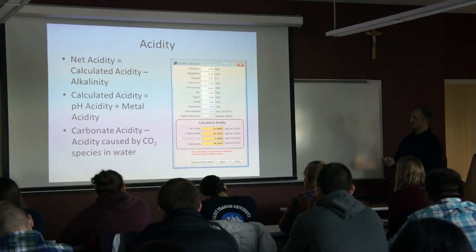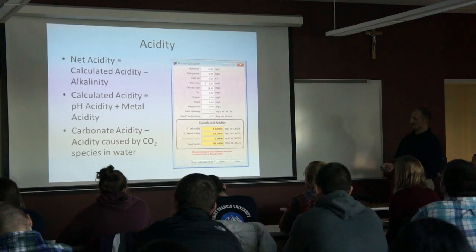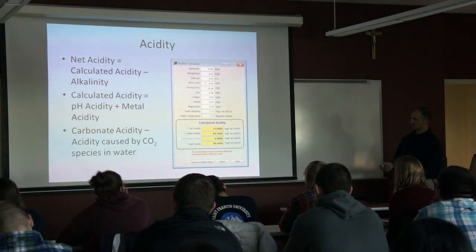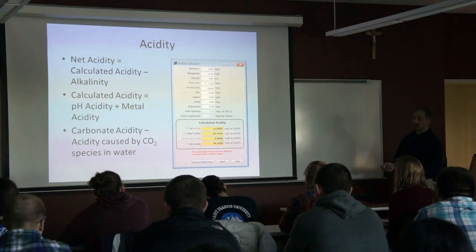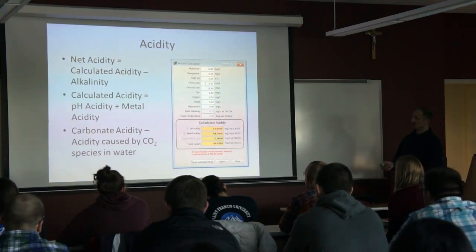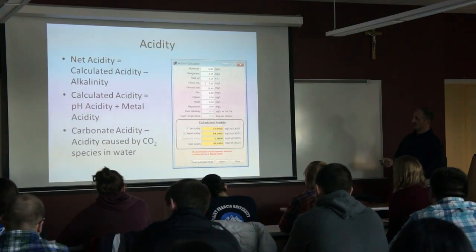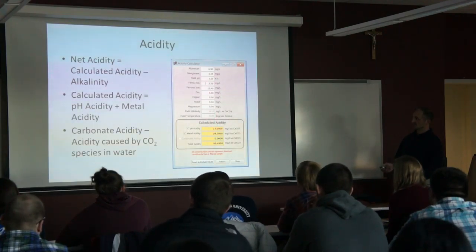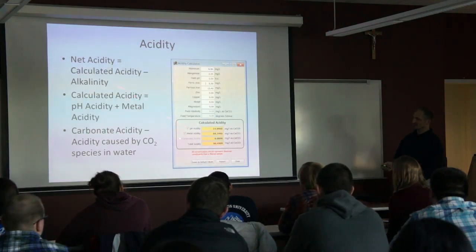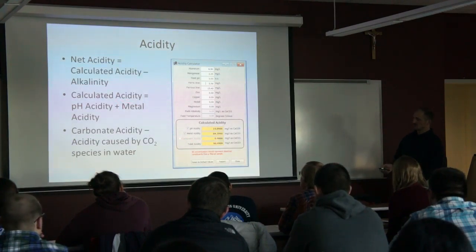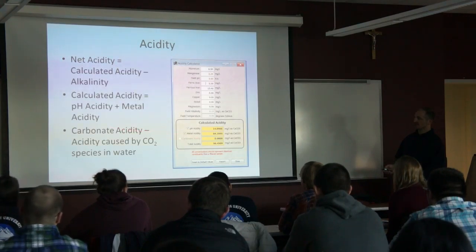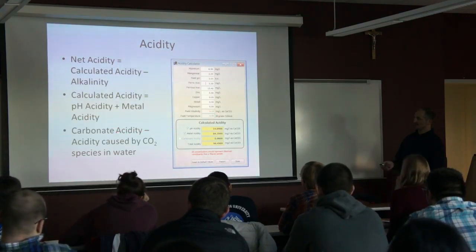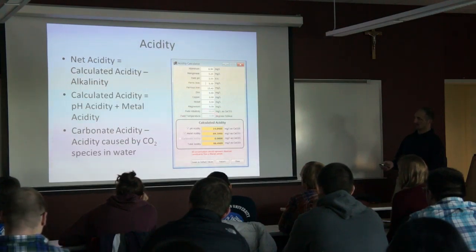Once you know the pH and these metal concentrations, you enter them in and this calculates the acidity: the pH acidity — which is how much is created just from the pH, where a pH of 3.5 gives us that much — and the metal acidity from the concentrations of metals. It adds them up to give total calculated acidity. There's one component not activated here called carbon acidity, because there's essentially no alkalinity in this water right now.